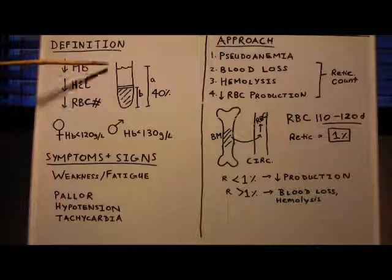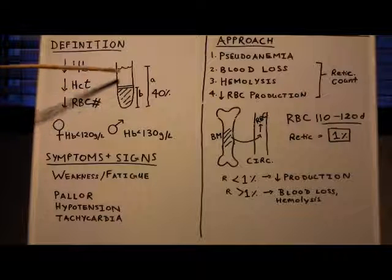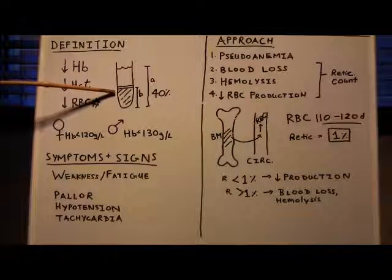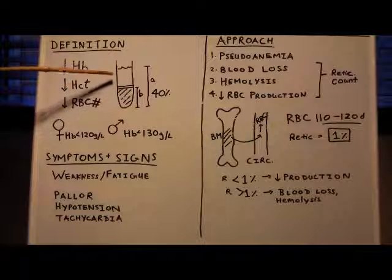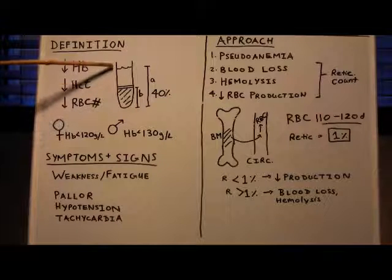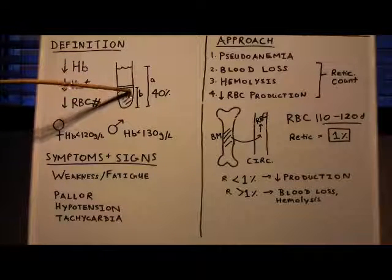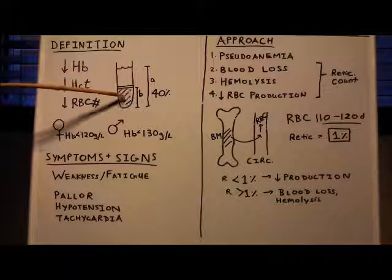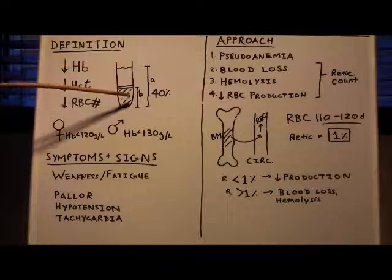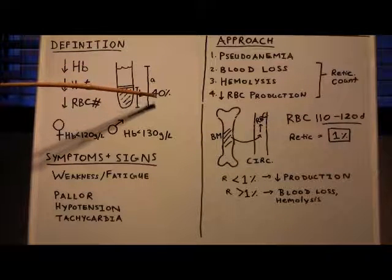Hematocrit - we're going to look at the diagram over here. If you take a vial of blood and you centrifuge it, the plasma is going to go to the top, and all the cells are going to fall to the bottom. Hematocrit is the volume of blood that is occupied by red blood cells. So let's say all the blood in this vial is A, and the red blood cells over here are B. Hematocrit would be B over A. A normal hematocrit is about 40%.